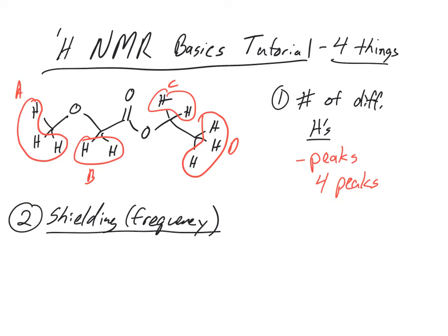The second thing NMR tells us is something about shielding — the frequency that the hydrogens, the peaks, come at. So we have four different peaks, but how can we start to tell these peaks apart — A, B, C, and D? One of the ways is to think about what they're near: are they shielded from the radio waves of the NMR, or are they deshielded?